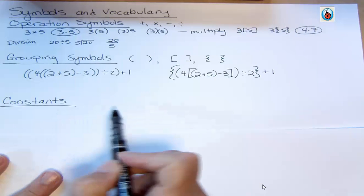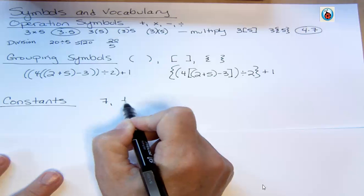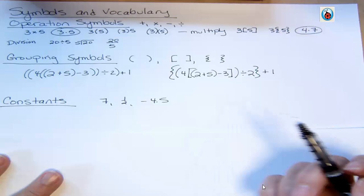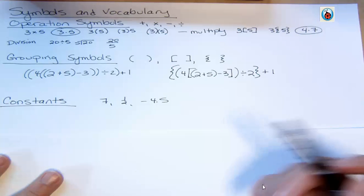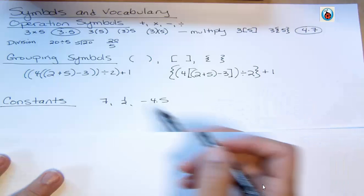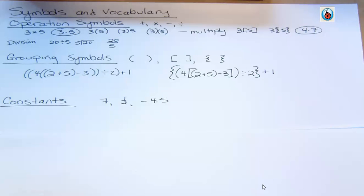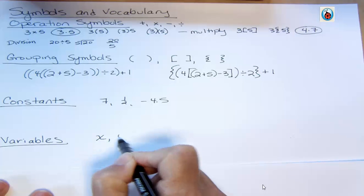Now we have constant terms. Constant terms are just numbers like 7, 1 half, negative 4.5. They're always the same number regardless of what you do with them, wherever they are. And then we have variables because sometimes we have numbers and we're not sure what it is in that particular time or we have something that can change. For our purposes, we use variables. We use letters.